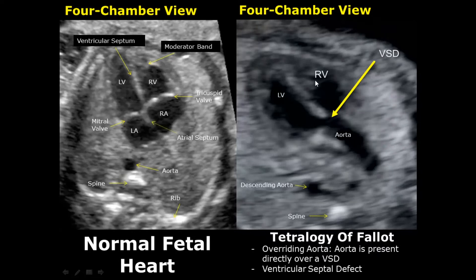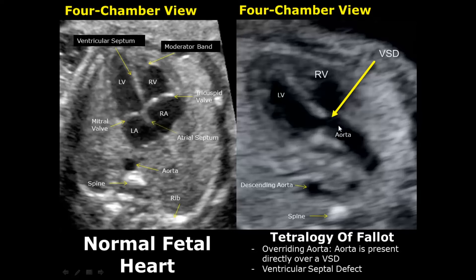Tetralogy of Fallot contains four abnormalities: right ventricular outflow tract obstruction, a ventricular septal defect, right ventricular hypertrophy, and an overriding aorta. Two abnormalities are more easily seen on ultrasound: the ventricular septal defect, and the overriding aorta, in which the aorta overlies the ventricular septal defect.